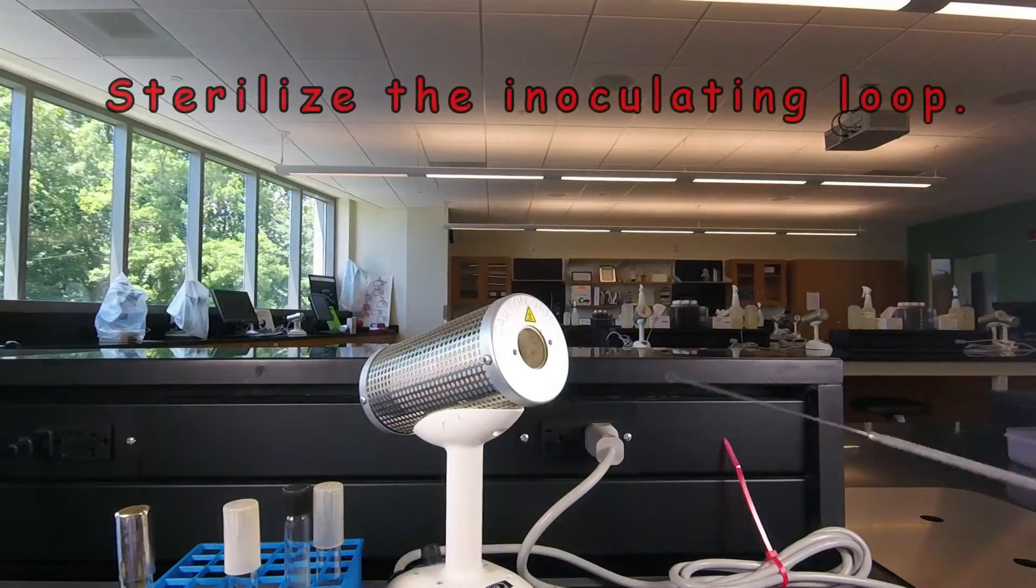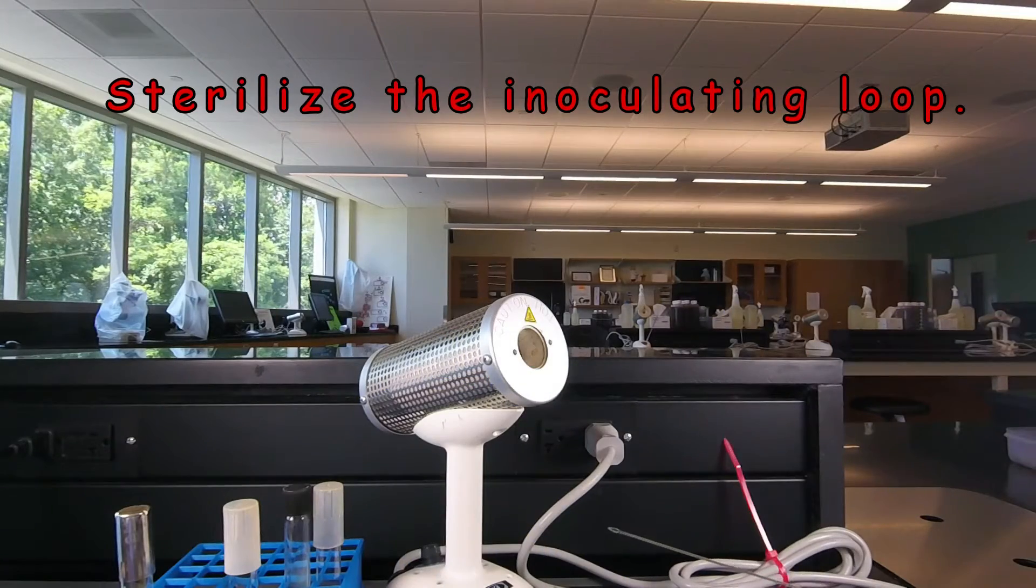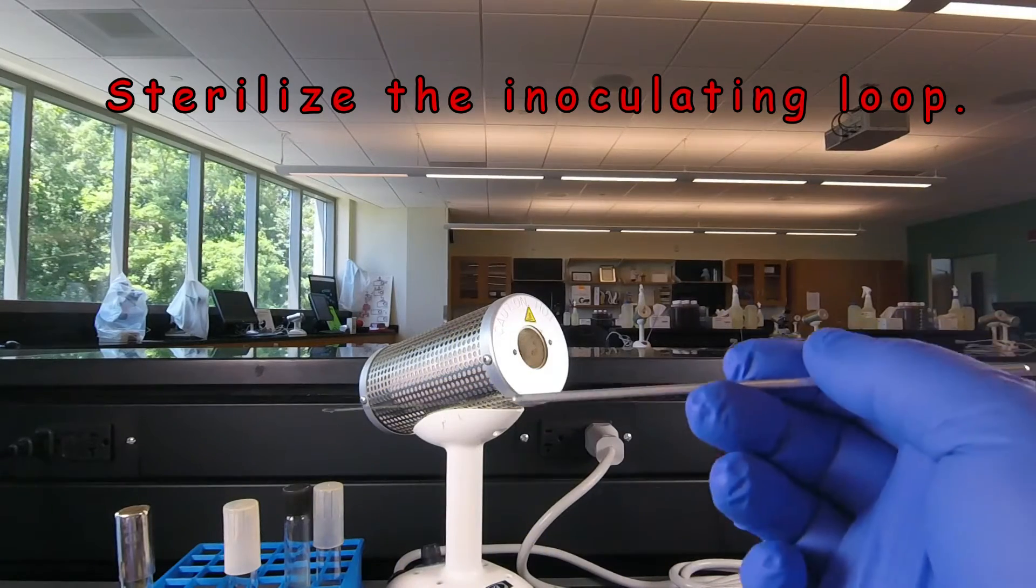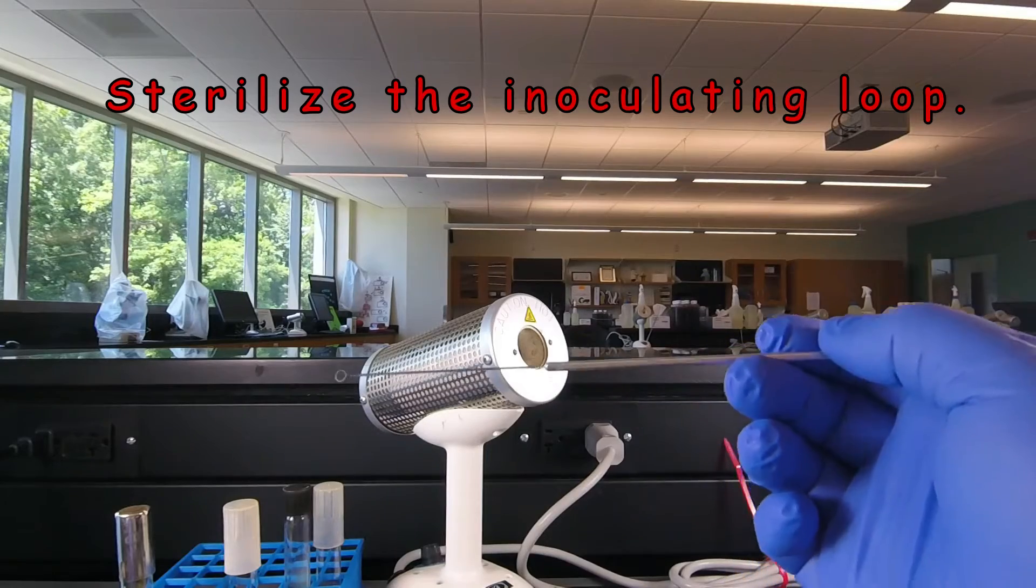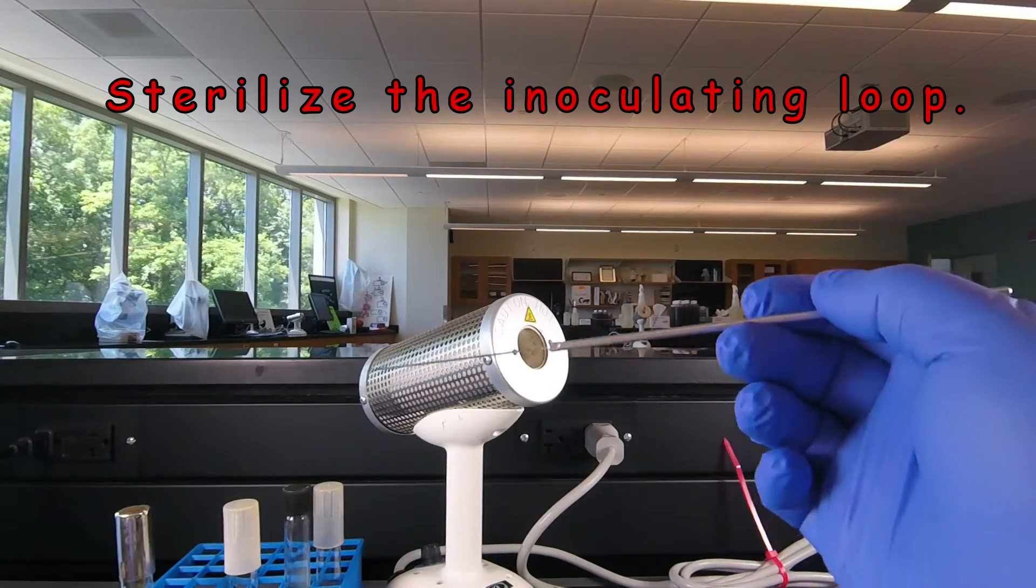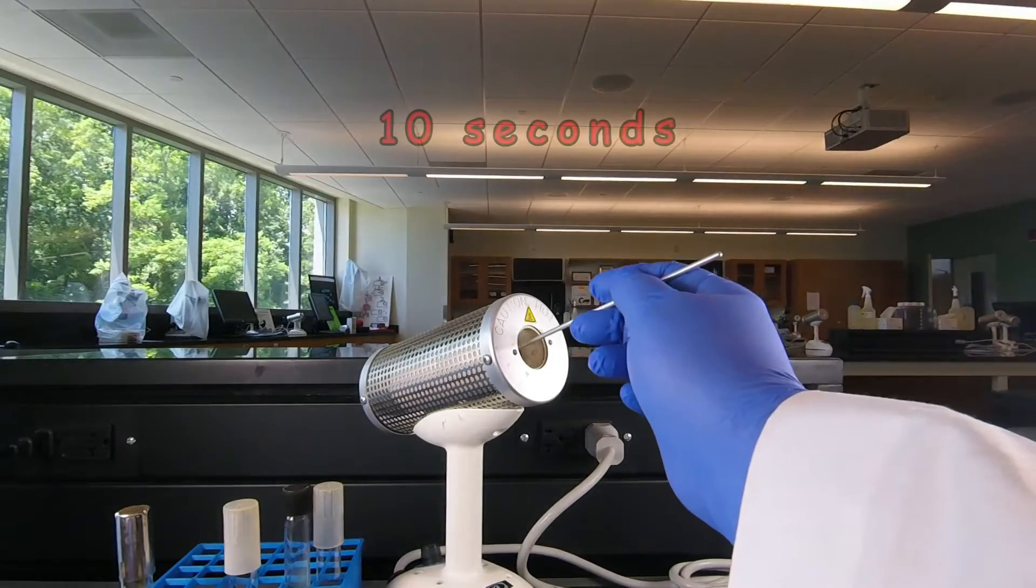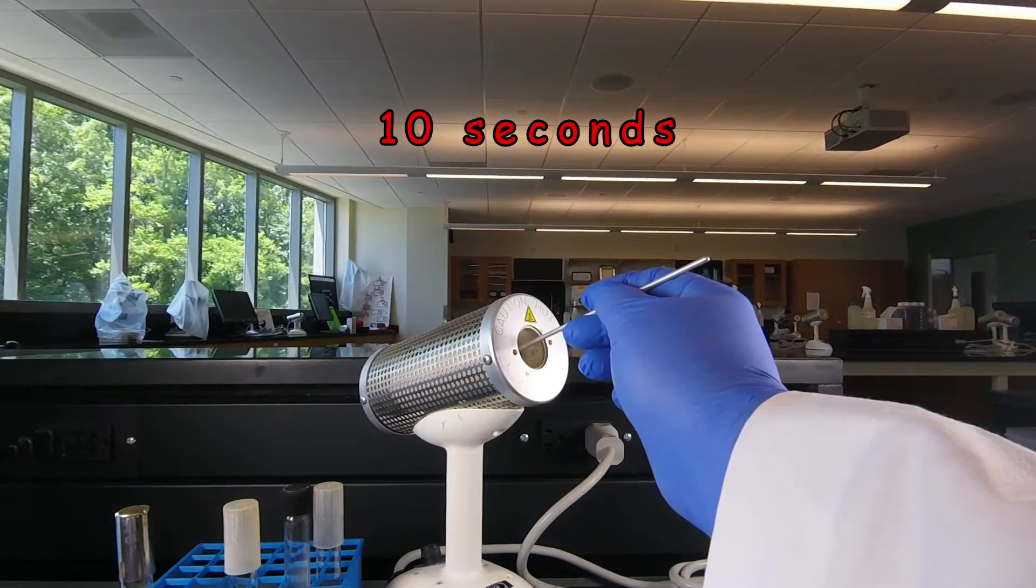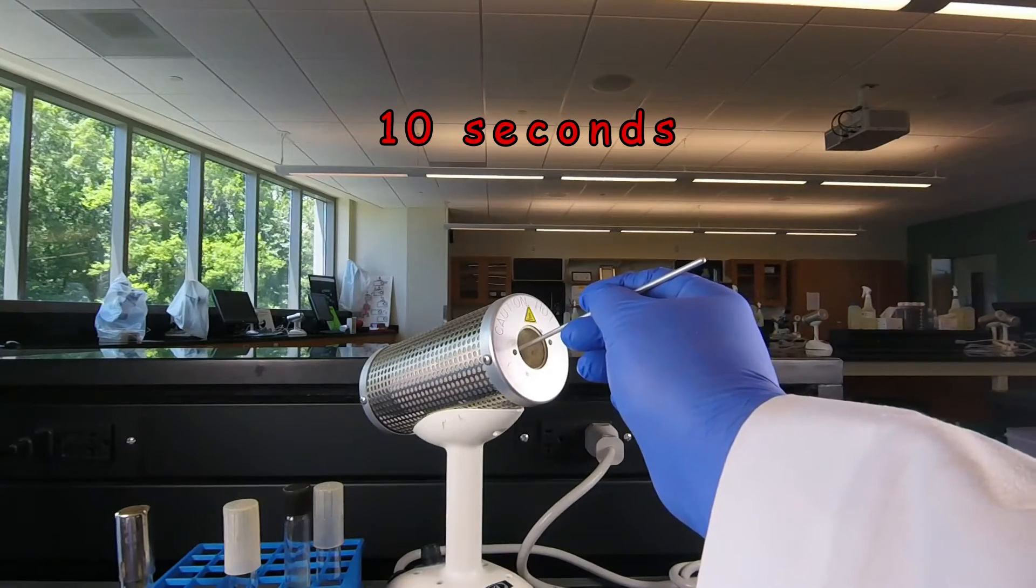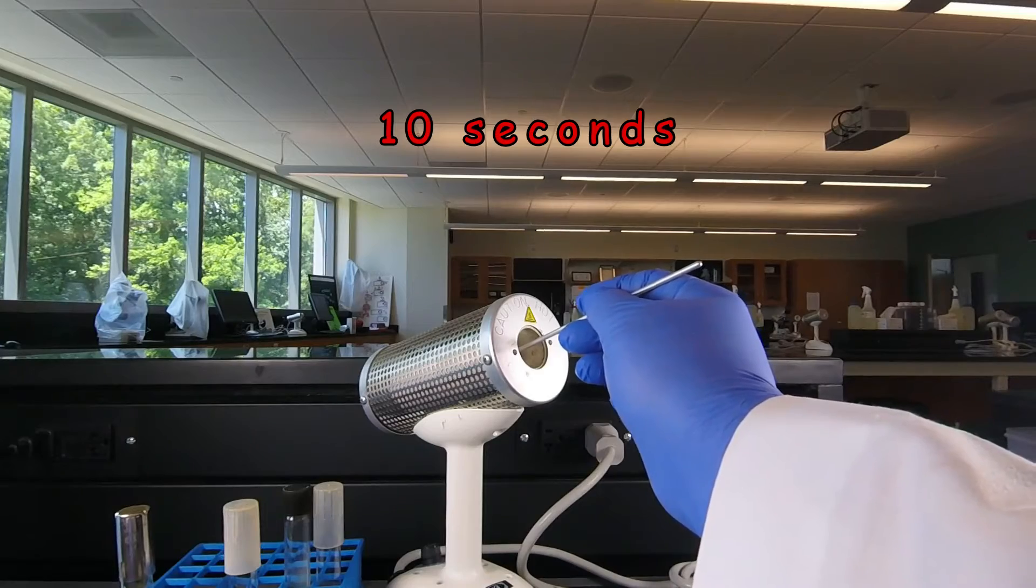We start of course by sterilizing our inoculating loop. So again we hold the inoculating loop in our hand, kind of like we would a pencil. We stick it in the Bactone cinerator, hold it in for a full 10 seconds. You want the whole wire and the beginning part of the handle in the Bactone cinerator.